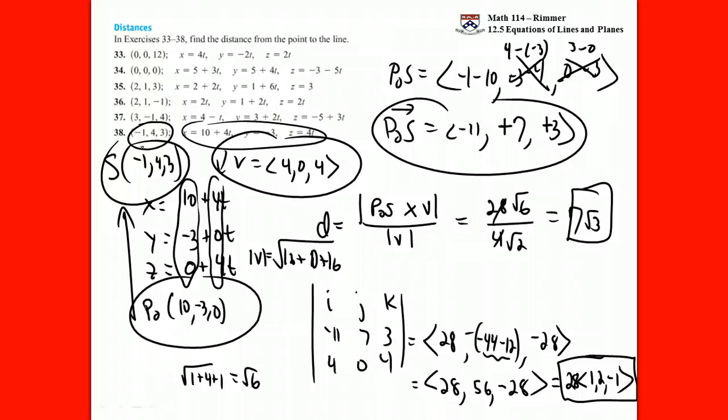This formula is not in the explanation part of the text — it doesn't appear until the exercise part — but here we are, and I showed you how to derive it. That officially finishes section 12.5. To summarize: you need to be able to find the equation of a plane, the equation of a line, know their interactions — how two planes intersect, how two lines intersect — know how to find the distance between a point and a line, distance between a point and a plane, and the angle between two planes. All these things are necessary.